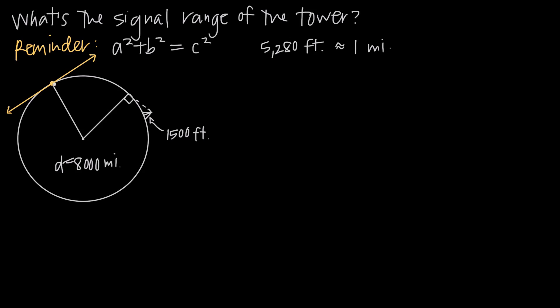Now obviously, we could have a tangent line at any point around the perimeter of the circle, but this is the specific tangent line at this point. The way that you know that a line is tangent is if you have a right angle between the radius and the tangent line.